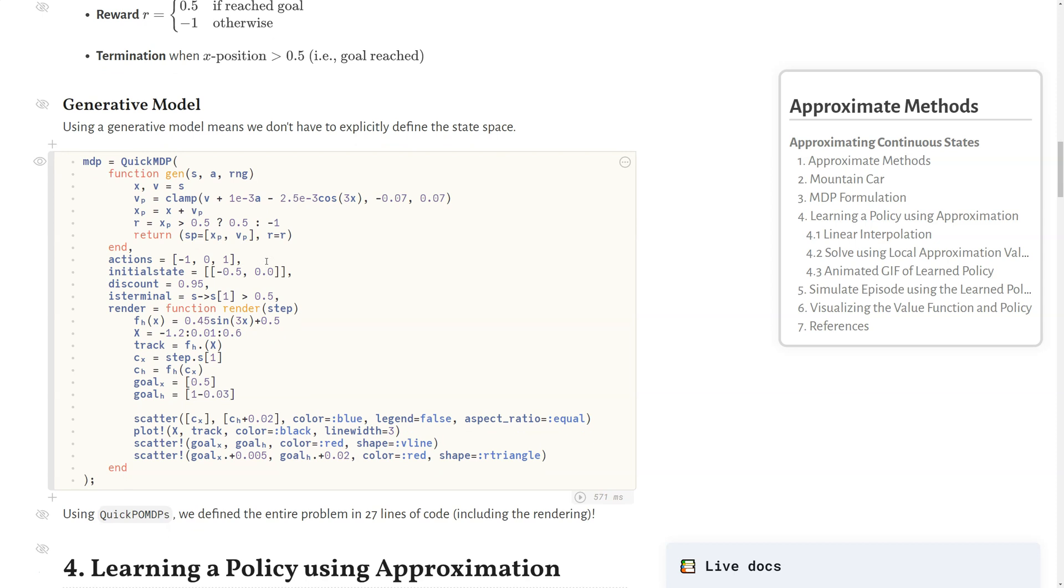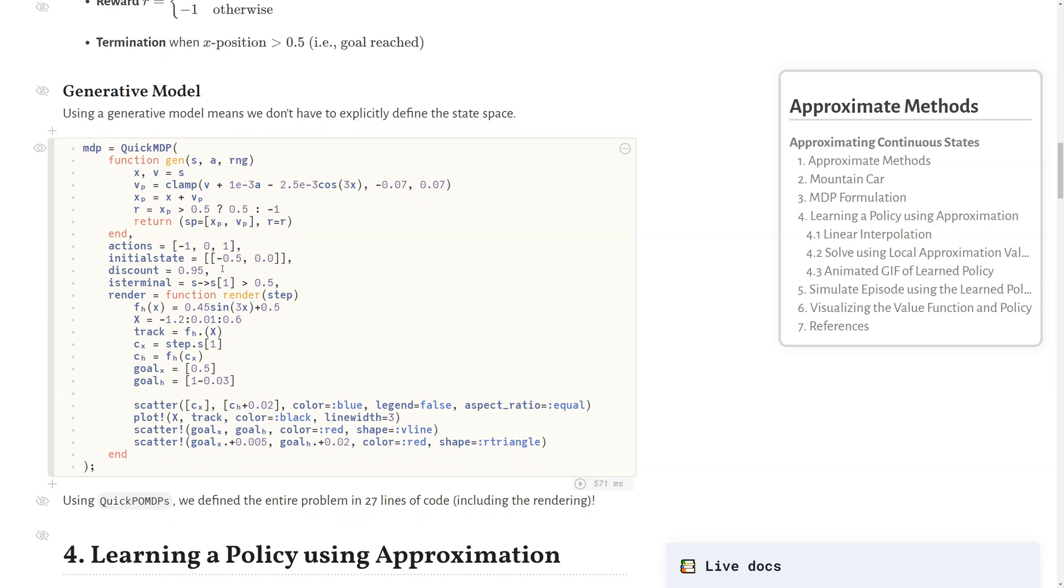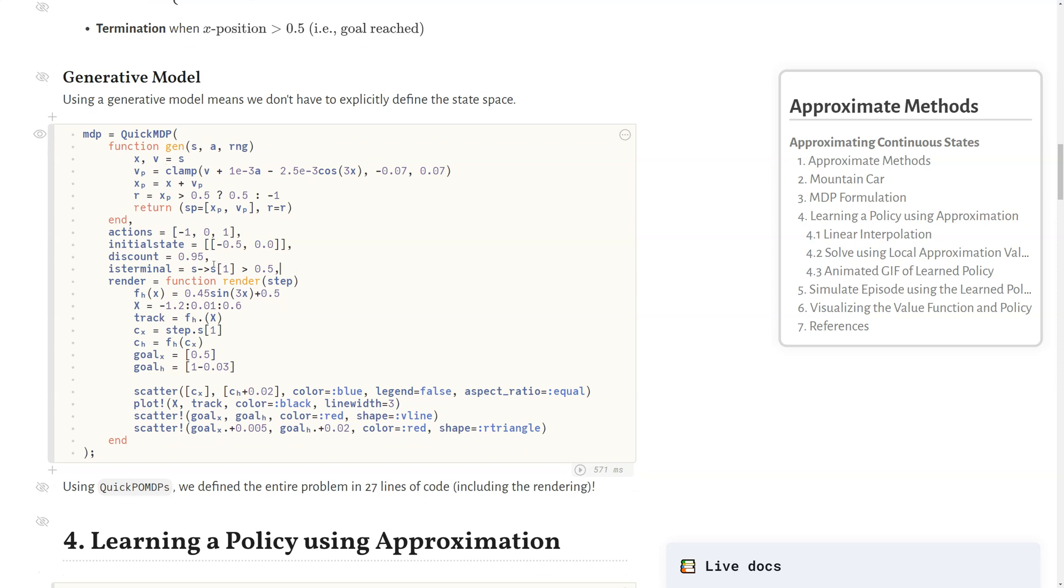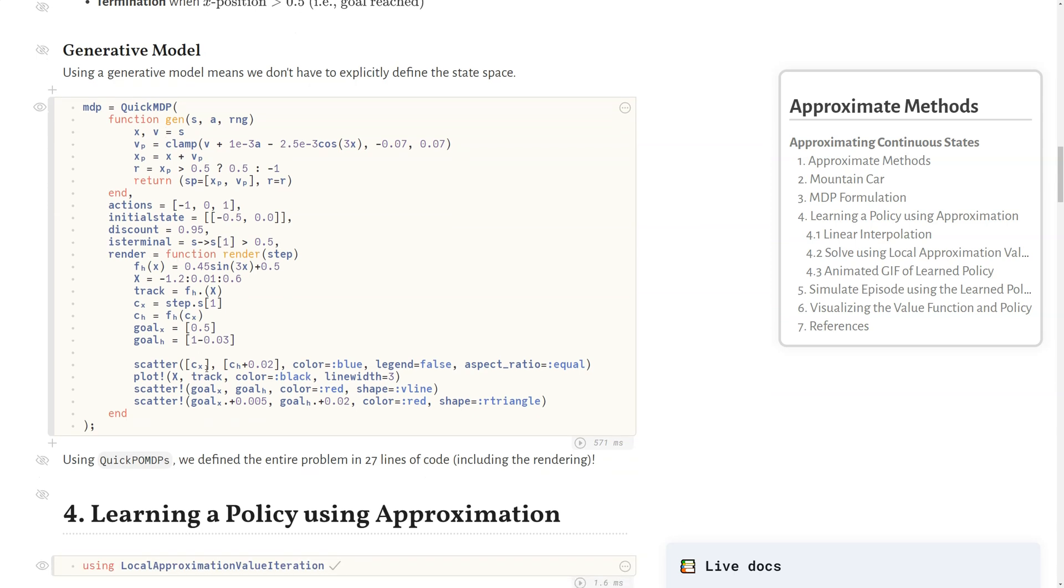We can define our action space which as mentioned is negative one for push left, no push, or push right. Our initial state is deterministic at position negative 0.5 and no velocity. We'll have a discount factor of 0.95 and our termination as described is when we reach the goal. This is the render function that just defines the hill and fancy stuff for the flag.